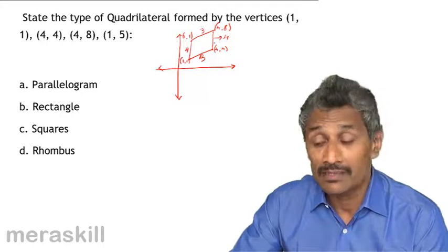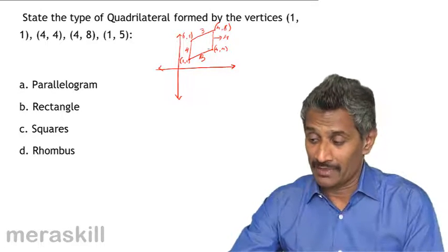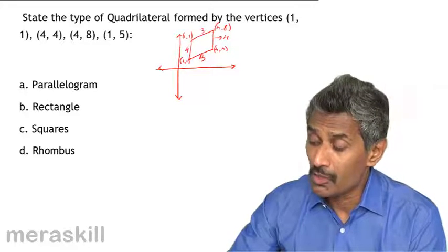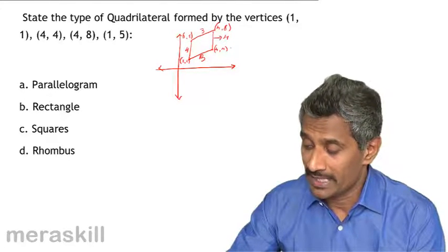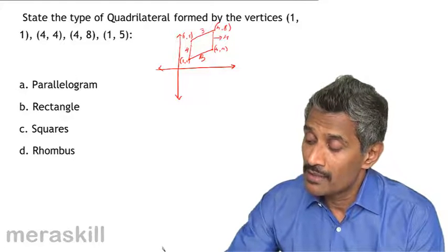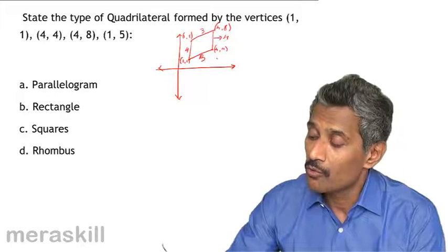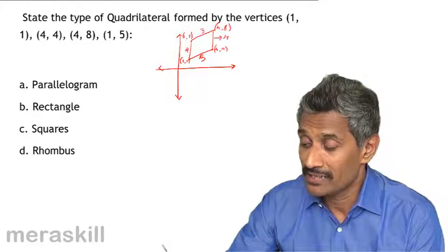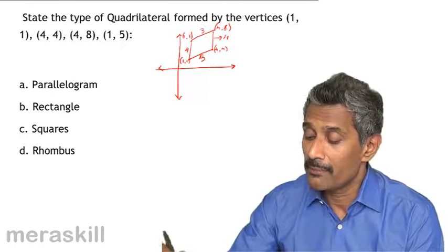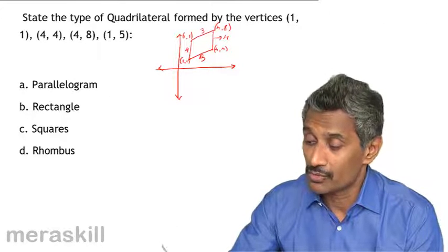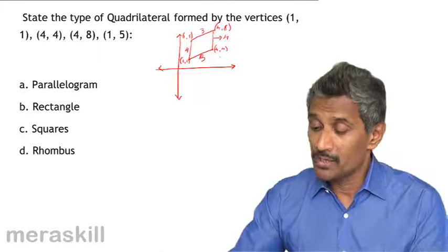For all that matters it could be a parallelogram, rectangle, rhombus, or square. But it cannot be a square or a rectangle, because if it were, sides would be parallel to the x or y axis. For example, (1,1) and (4,1) would form a horizontal line. Here, no two lines are parallel to the x or y axis — two opposite sides are parallel to each other, but not to the axes.